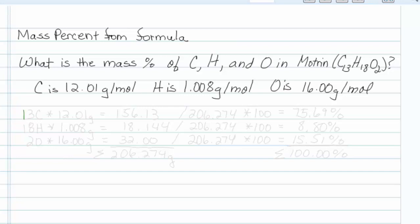We have 13 carbons, and each one of those carbons weighs 12.01 grams, so that gives us a mass of 156.13. We have 18 hydrogens. Each one is 1.008 grams, so that gives us a mass of 18.144, and we have two oxygens. These are each 16 grams, so 32.00.